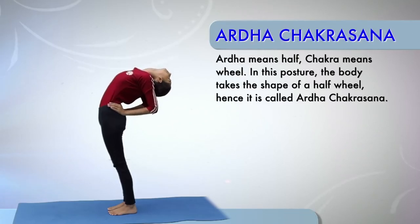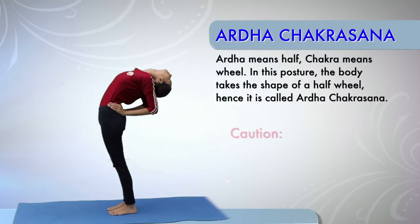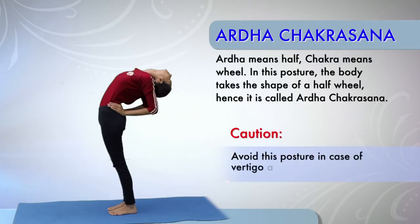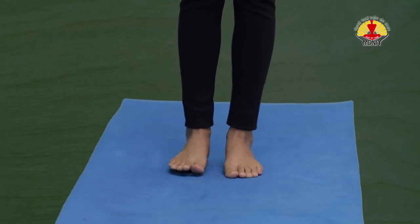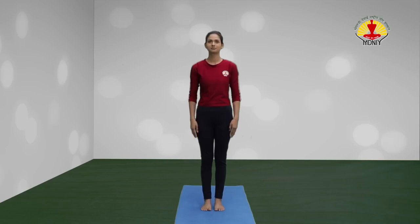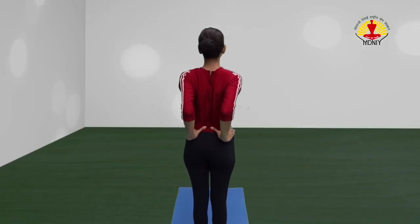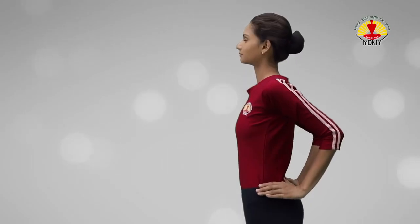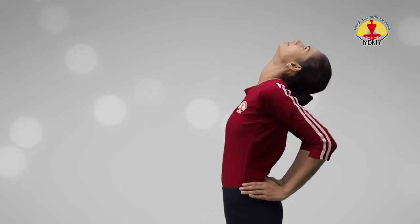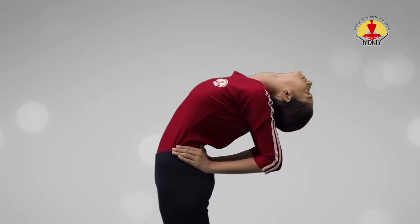Ardha Chakrasana or the half wheel posture. Caution: avoid this posture in case of vertigo and cardiac problems. Starting from alert posture, stand with feet two inches apart. Support the back at the sides of the waist with the fingers, trying to keep the elbows parallel to each other. Drop the head backwards, stretching the front side of the neck.